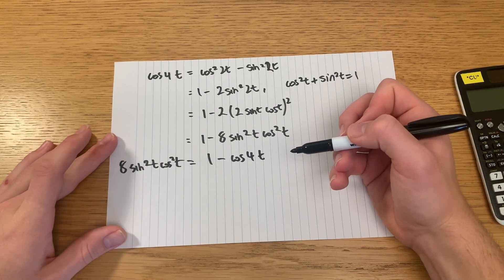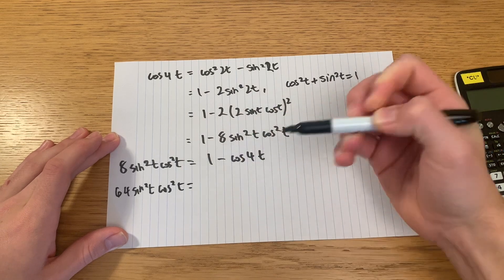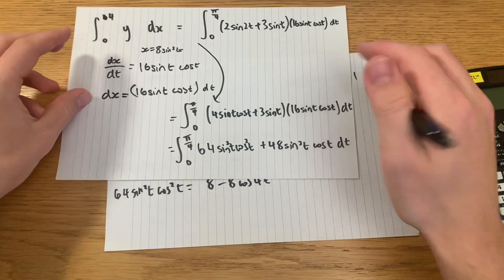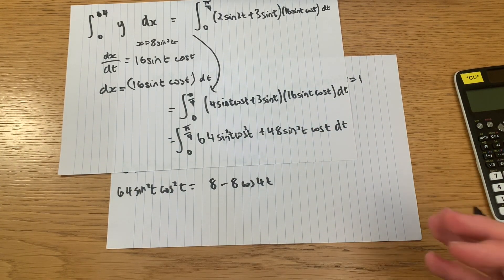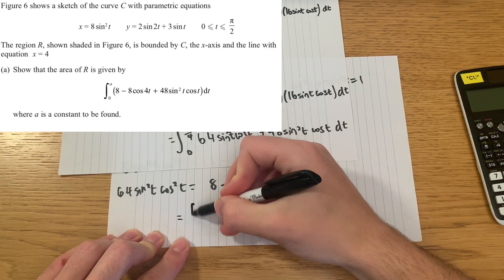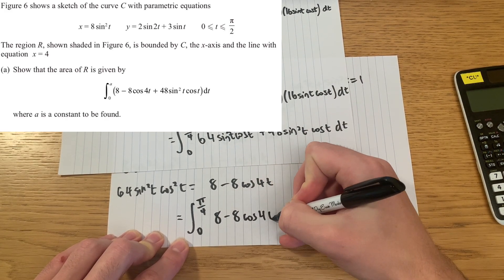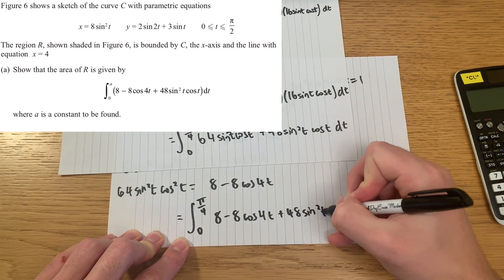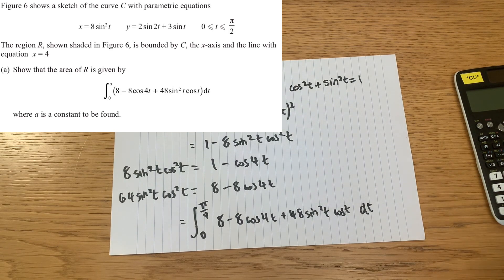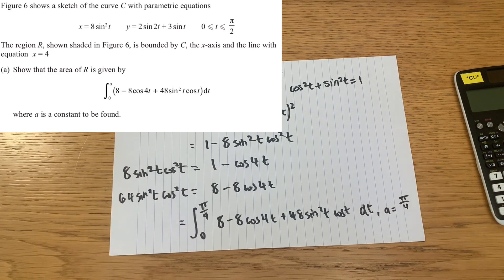Substituting back, the area equals the integral between pi over 4 and 0 of (8 minus 8 cos 4t plus 48 sine squared t cos t) with respect to t. This matches the required form exactly. We can state that A equals pi over 4, completing part a of the question.